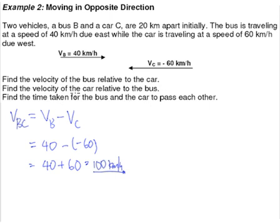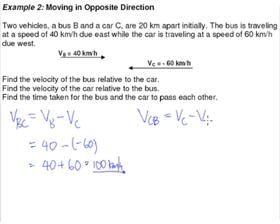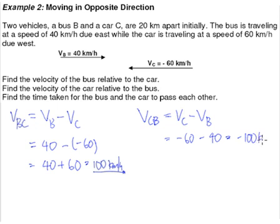Let's go on to the next part of the question: find the velocity of the car relative to the bus. So it's CB, which will be velocity of C minus the velocity of B, which in this case will become negative 60 minus 40. That will give us the answer of negative 100 kilometers per hour.